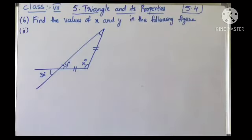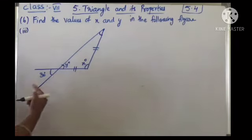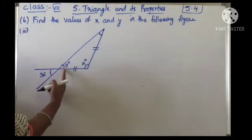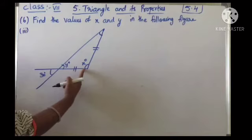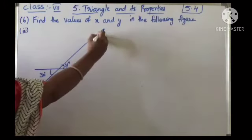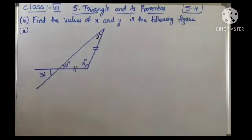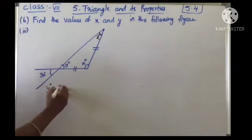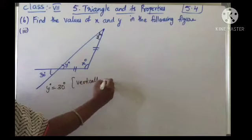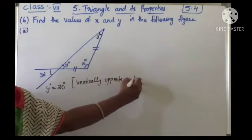Coming to the third figure, find the value of x and y. These two are vertically opposite angles, so we can take y as 30 degrees. There is no angle given at the third vertex, so I am taking it as z. So angle y equals 30 degrees — they are vertically opposite angles.